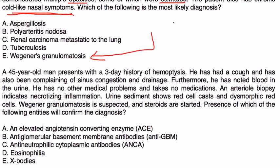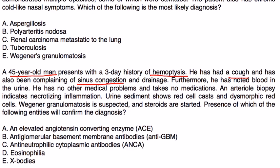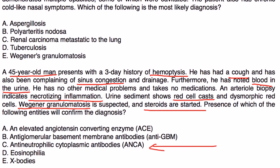Clinical vignette two: A 45-year-old man presents with a three-day history of hemoptysis, cough, sinus congestion, and blood in the urine. Arterial biopsy indicates necrotizing inflammation; urine sediment shows red cell casts and dysmorphic red cells. Wegener's granulomatosis is suspected and steroids are started. The question asks which test confirms the diagnosis — as discussed, the answer is ANCA, specifically C-ANCA.